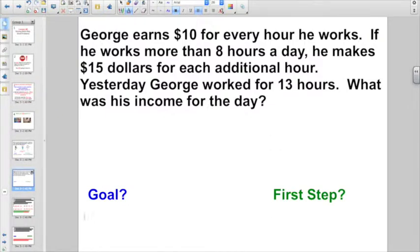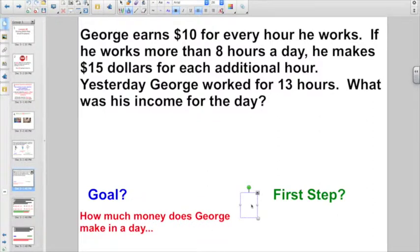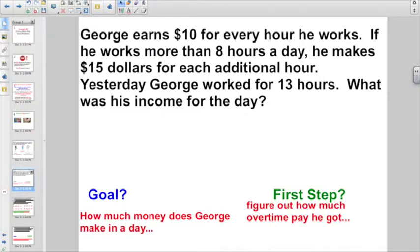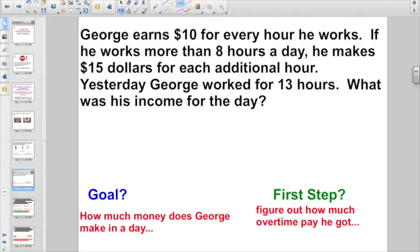So, let's think about what our goal is. Our goal is going to be how much money does George make in a day. But the first step, I would say, is figure out how much overtime pay he got. That would have to be the first step because he's getting overtime. He gets $15 an hour for every hour over eight hours. So, that day he worked 13 hours. Anything more than eight, he gets overtime for. So, how many overtime hours did he work? Well, 13 minus eight, he'd have to have worked five hours of overtime, right?